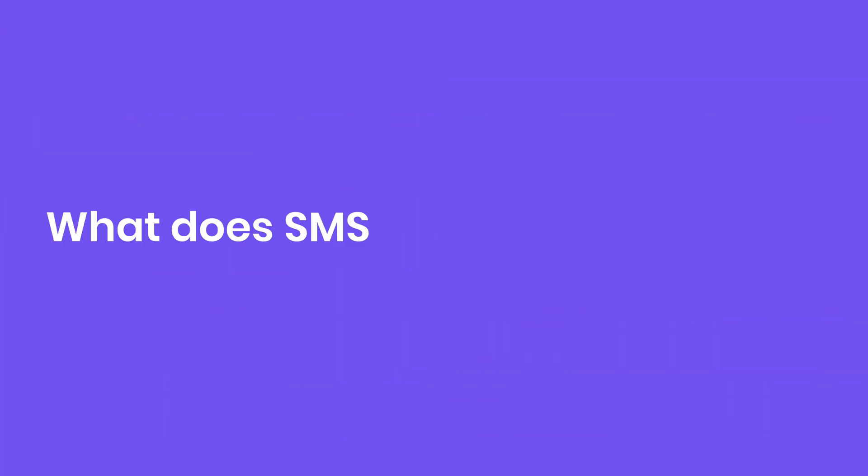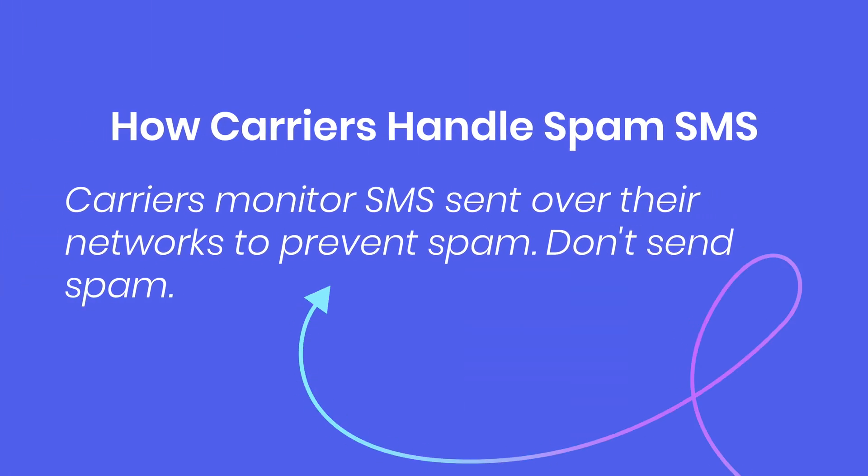What does SMS deliverability mean? SMS deliverability is the whole process responsible for placing a text message into your contact's inbox. High deliverability rates mean that your messages are successfully reaching their destination. Wireless carriers monitor SMS sent over their networks to prevent spam. Unlike email where spam filtering is often done in the email client, when a carrier considers an outgoing SMS message spam, they'll block it from ever reaching the recipient's phone.